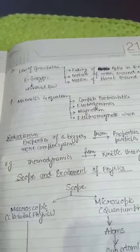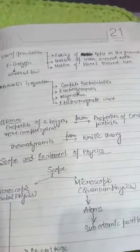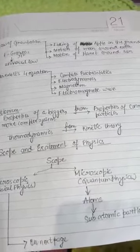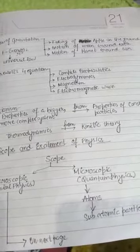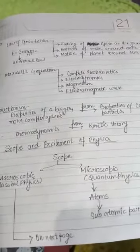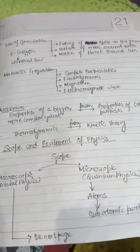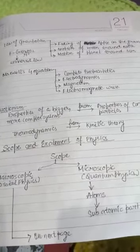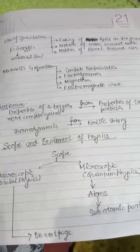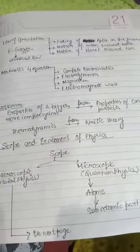In easy language, it is an attempt to explain a lot of phenomena by some fundamental laws. This is called unification. Like with the help of the law of gravitation you can explain falling of apple on the ground, moving of moon around earth, motion of moon around sun. And the next example is from Maxwell's fourth equation, we can explain complete electrostatics, electrodynamics, magnetism, and electromagnetic wave.